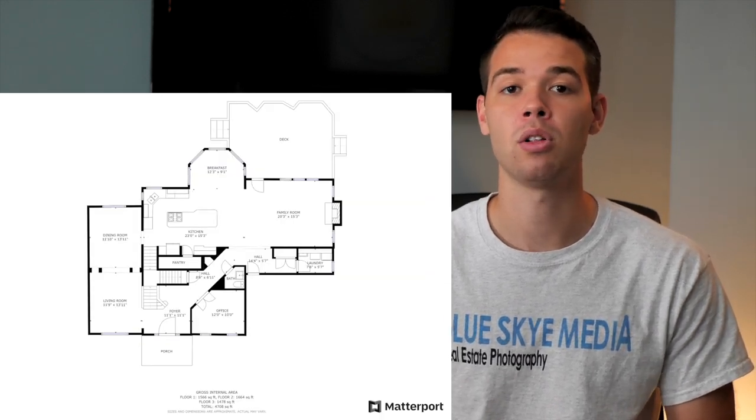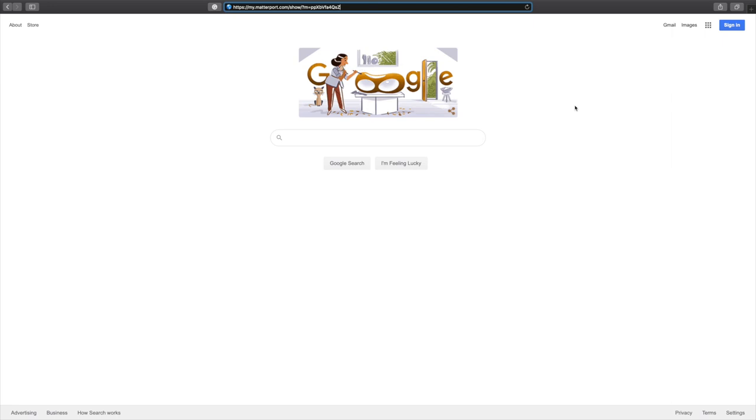Also, here at Blue Scout Media, 2D schematic floor plans come free with all orders of 3D Matterport tours. What I just showed you are the basic tools you'd get with a standard 3D Matterport tour. These features are more than enough to give you a complete representation of your listing. However, I want to hop into the computer and show you a couple more techniques and tools you can add — and you don't have to do any of this yourself, just ask your real estate photographer.